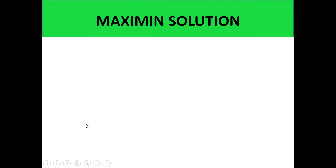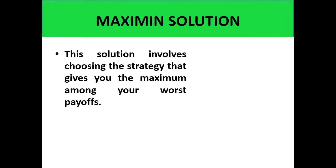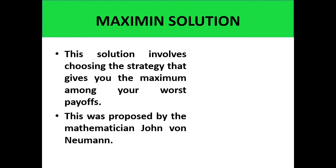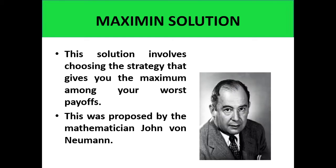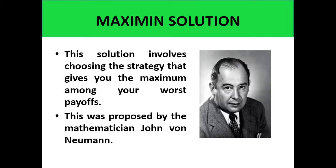The maximin solution involves choosing the strategy that gives us the maximum out of our worst outcomes. In other words, we are trying to get the best out of the worst. This strategy was proposed by the mathematician John von Neumann. The idea is: if a person tries to avoid the maximum penalty or maximum damage, they may employ this maximin strategy, which gives us the best out of the worst outcomes.